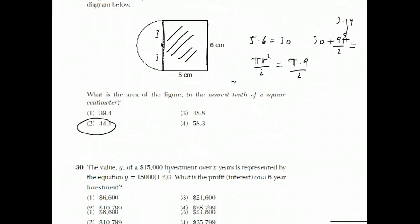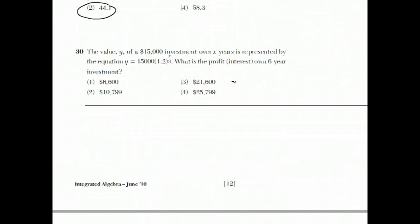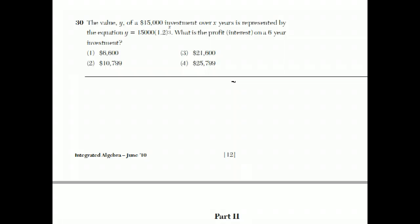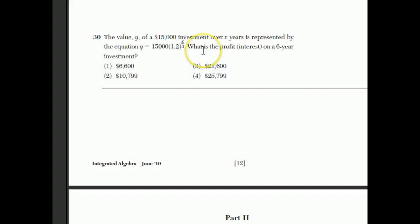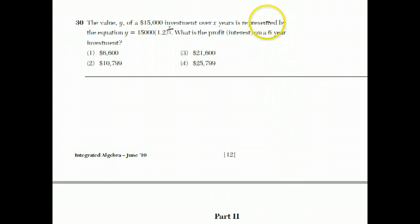Question 30. The value y of a $15,000 investment over x years is represented by the equation 15,000 times 1.2 to the x over 3. What is the profit on a 6-year investment? Well, there's two steps to this question. First,